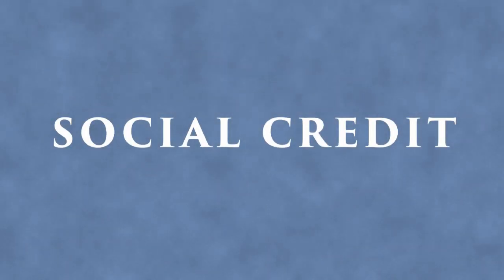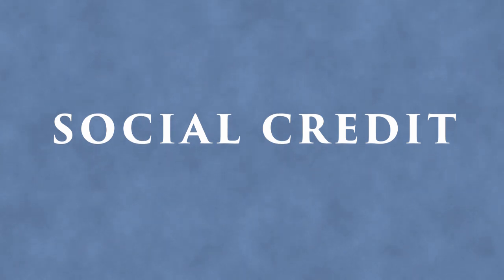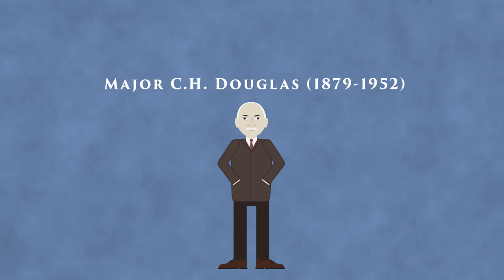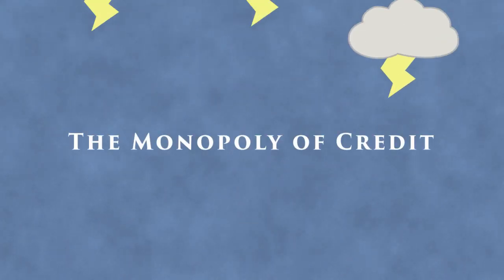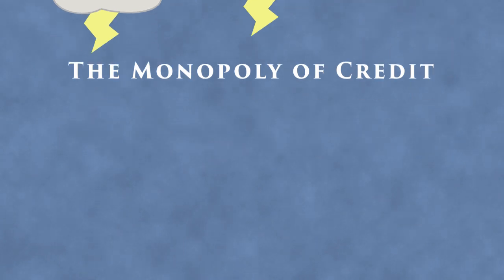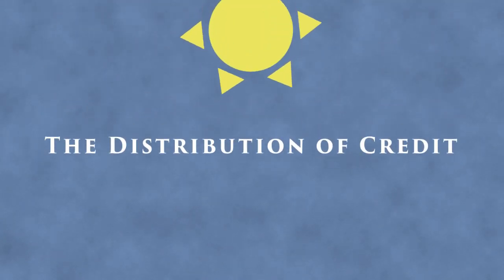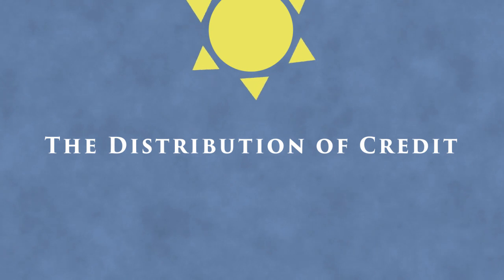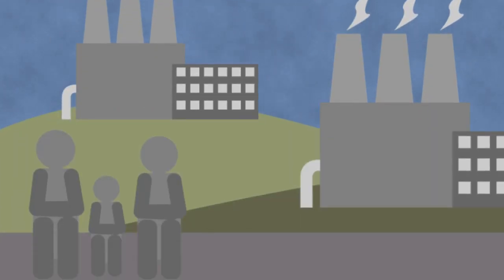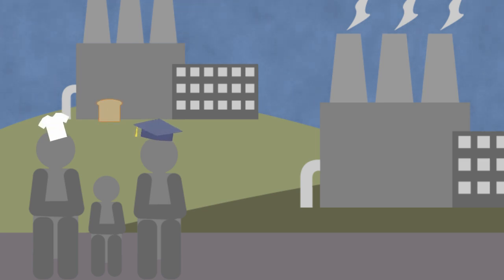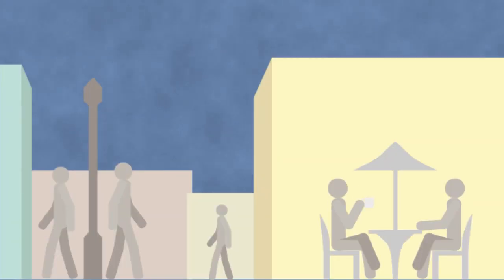Social credit is a body of socio-economic and political thought developed by the British engineer Major C.H. Douglas. In this short video we will examine the social credit analysis of the problems that characterize our current economic system as well as its remedial proposals. Once implemented, these proposals would finally allow economic associations to fulfill their true purposes: the delivery of the goods and services that people need to survive and flourish, with the least amount of resource consumption and of human labor.